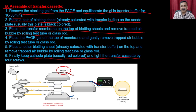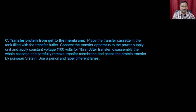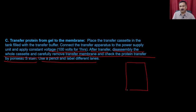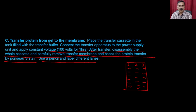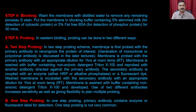Finally, keep the cathode plate and tighten the transfer cassette with four screws. After that, turn on the electrophoresis and apply a constant voltage for about one hour. After transfer, disassemble the whole assembly, carefully remove the transfer membrane, and check protein transfer by Ponceau stain. Use a pencil to label the membrane with lane numbers, because subsequent steps may remove permanent marker but pencil writing remains.